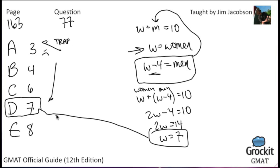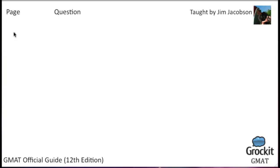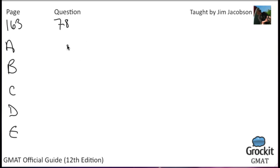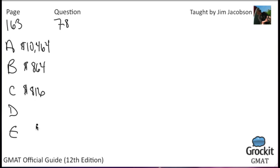That's it for question 77. On to number 78, still on page 163. The answer choices are $10,464, $864, $816, $800, and $480. The question: Leona bought a one-year $10,000 certificate of deposit that paid interest at an annual rate of 8% compounded semi-annually. What was the total amount of interest paid on this certificate at maturity?